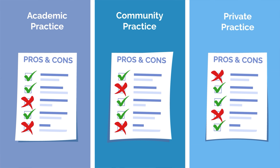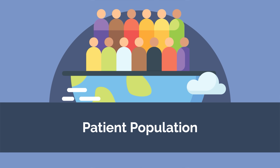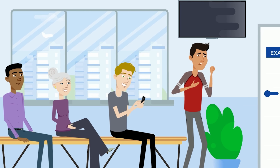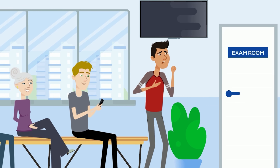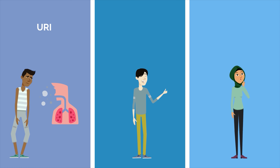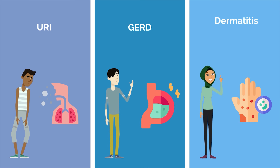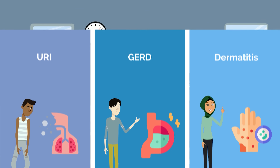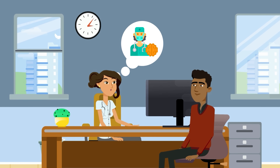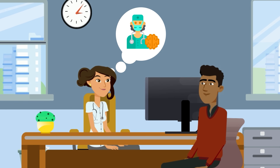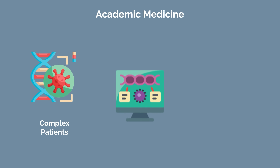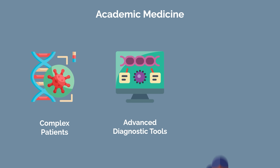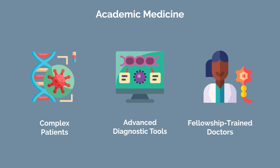What are the pros and cons of each practice? Let's break down the most important factors, starting with patient population. In community medicine or private practice, straightforward cases will be the bread and butter of your specialty. Anything too complex will require more specialized care than what your hospital's resources can offer. Complex patients are usually referred to larger academic centers, where hospitals have more advanced diagnostic tools and specialized physicians trained for these cases.